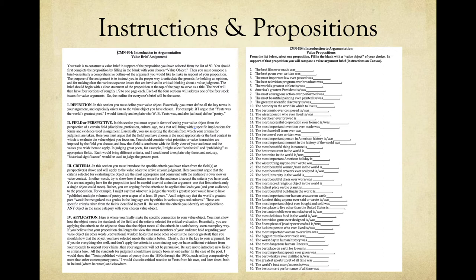Once you select a proposition, you then need to select a value object to fill in the blank — that is, to complete the proposition — so you have a full statement that serves as the claim your whole value argument supports. For example, if you look at proposition number 13, 'the best beer ever brewed is,' you can complete that claim by filling in any value object from the category of beers, such as Bud Light, Shipyard IPA, or Guinness.